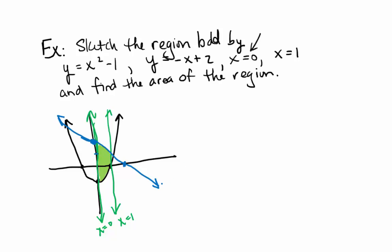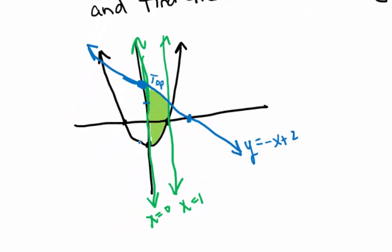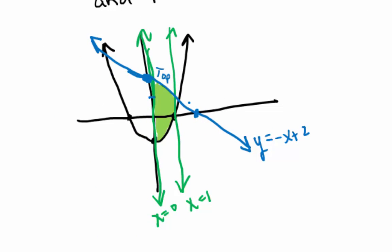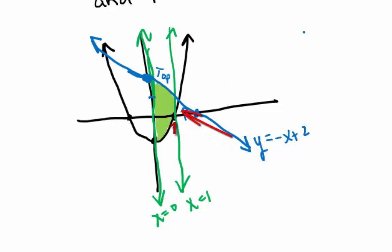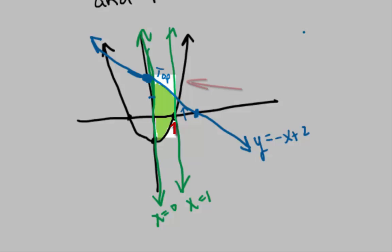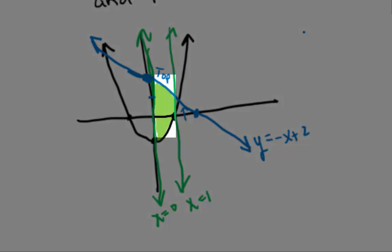y equals negative x plus 2 is the function on the top. In this case, we don't really have to find any intersection points, as long as you're comfortable with the idea that this intersection point is occurring past 1, because the parabola goes through this point here and continues going outward. So it's past this point, out here — there's no intersection point going on in here anywhere.